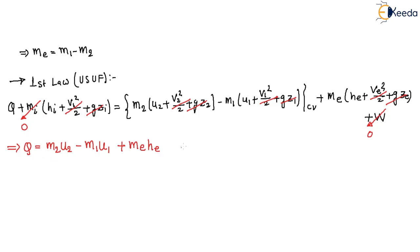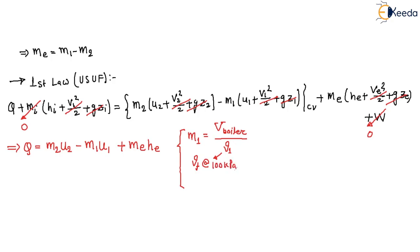To calculate m1: m1 = Volume of boiler / specific volume v1. Here v1 = vf (saturated liquid) at 100 kilopascal, obtained from the water table. The boiler volume is 100 liters. To calculate m2: m2 = Volume of boiler / specific volume v2, where v2 = vg (saturated vapor) at 700 kilopascal, also from the steam table.